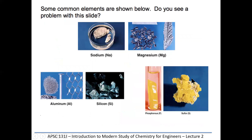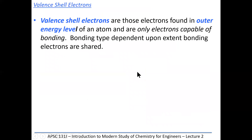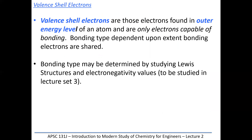Here are some pictures of common elements. Sodium is a very active metal; in its pure elemental form it has to be stored in a liquid other than water, because sodium will burst into flames in the presence of water. Phosphorus, on the other hand, is stored only in water, because outside of water it can burst into flames. Both of these substances are not stable in their elemental form — they're always combined with other elements to form compounds. Valence shell electrons are found in the outer energy level of the atoms and are involved in bonding.